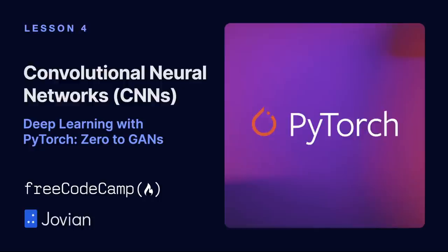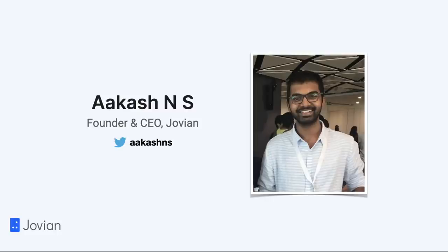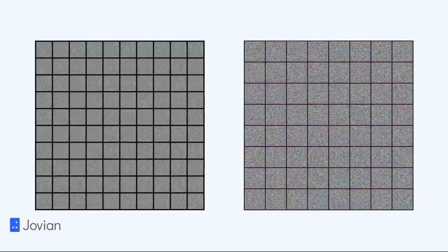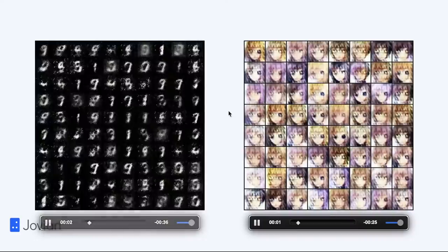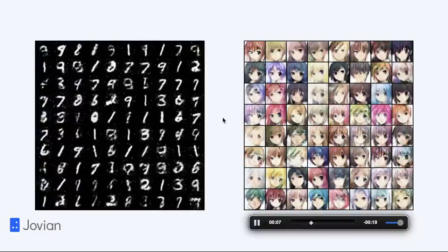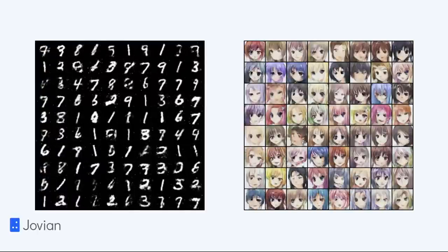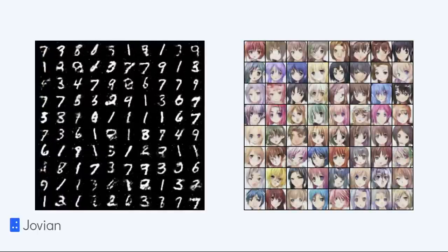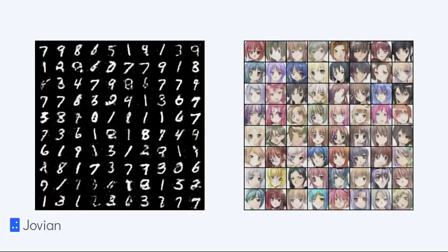Hello, and welcome to Deep Learning with PyTorch: Zero to GANs. This is an online certification course organized in collaboration by freeCodeCamp and Jovian. Today we are on Lesson 4: Convolutional Neural Networks. My name is Akash and I am your instructor. By the end of this course, we will figure out how to train a model which can go from producing random noise to producing fairly good images of handwritten digits and of anime faces. The same model will be used to produce both kinds of images — all that is going to be different is the data used to train the model. These are called Generative Adversarial Networks, or GANs.